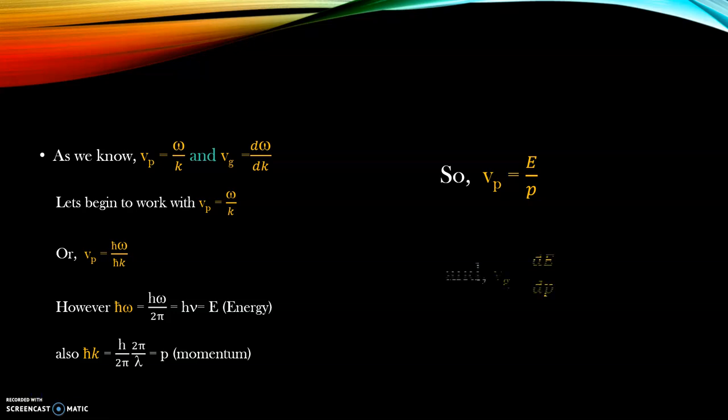Hence, what we are receiving here is that phase velocity is not only omega by k but it is also the ratio of the energy and momentum. Following the same line, we can write that the group velocity is not only d omega dk but d E dp.